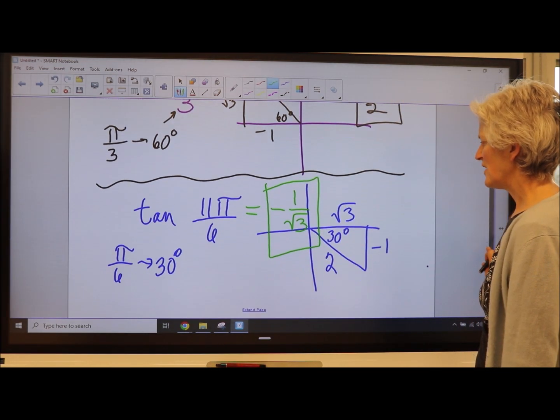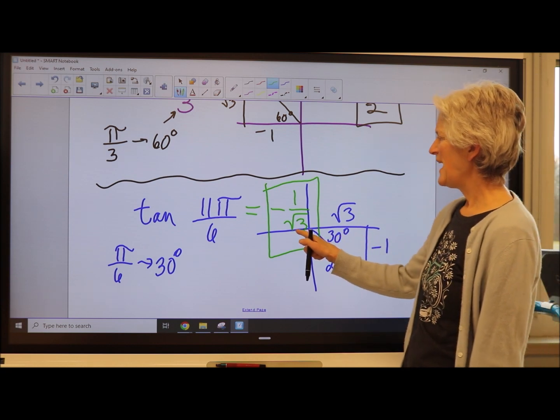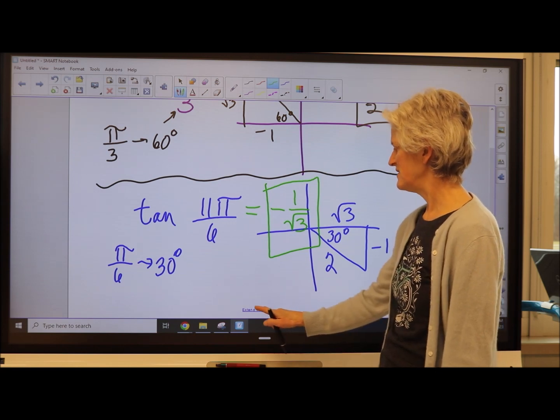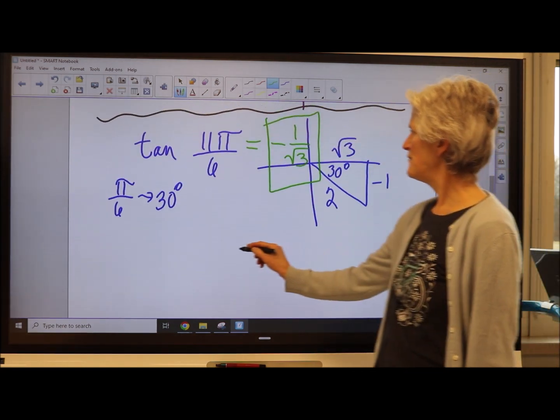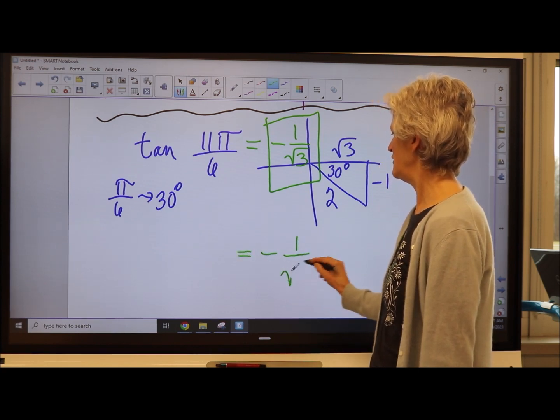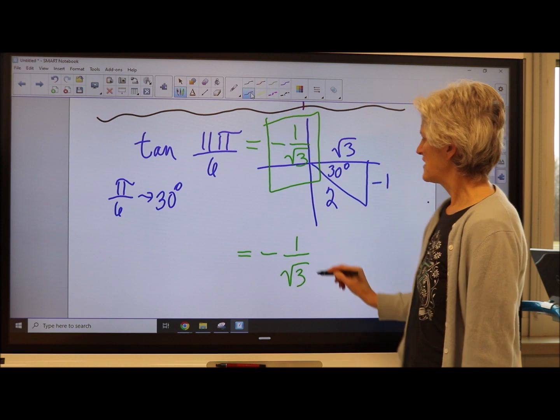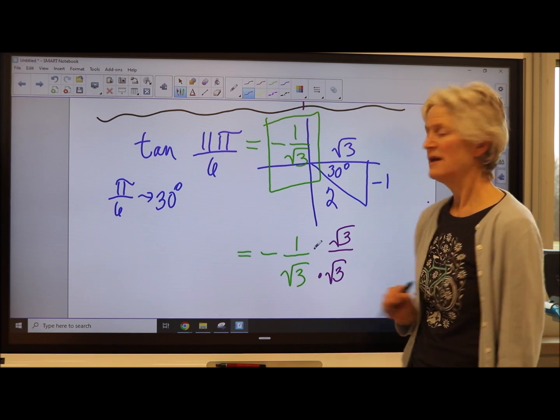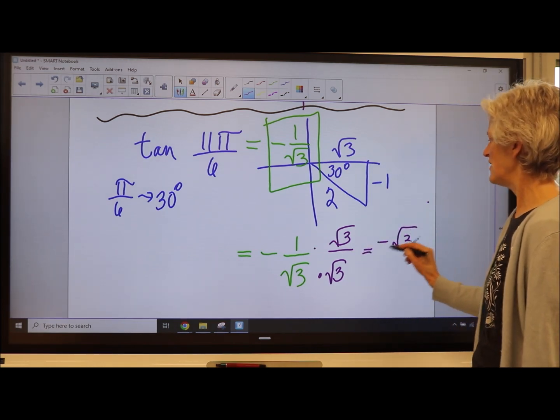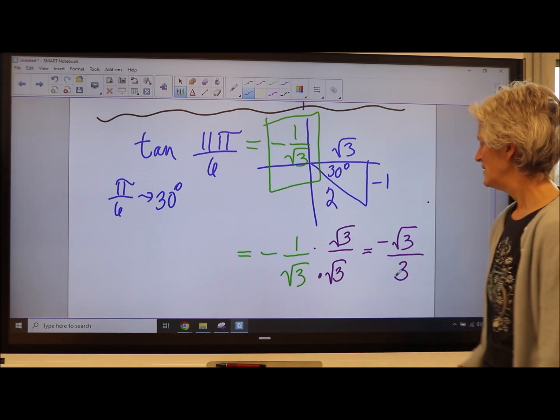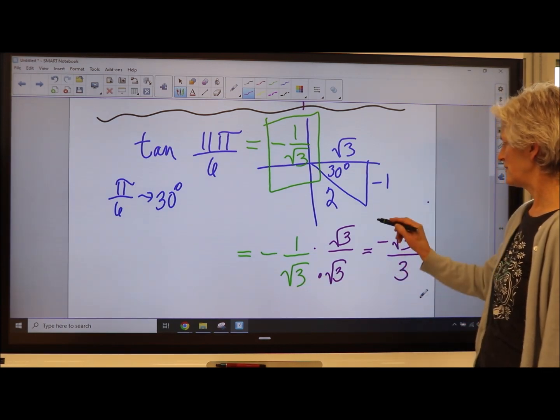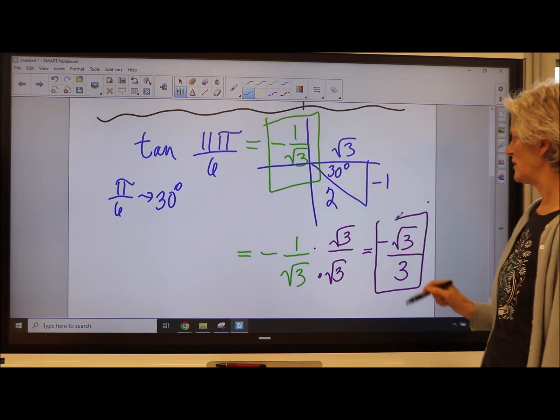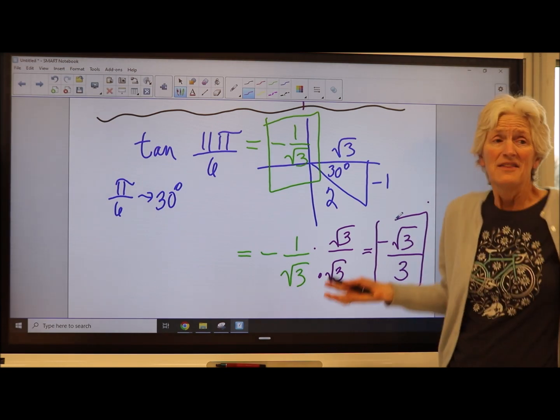By the way, lots of times when you have an answer like this where you have a radical in the denominator, we sometimes talk about rationalizing the denominator. You don't have to do that for me, but it's good to know just in case you see it. Basically, I'm just going to multiply by a handy form of 1, which we do a lot in math, to make the denominator something rational, something nice, in other words. So you could write this answer, the tan of 11 pi over 6, either as negative 1 over the square root of 3, or as negative square root of 3 over 3. They're equivalent.